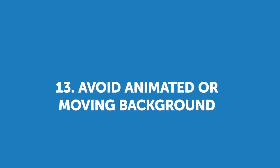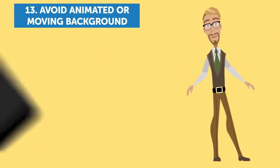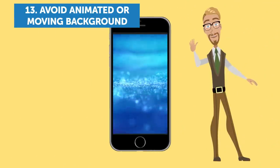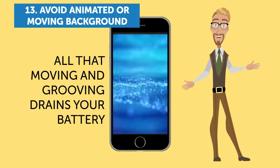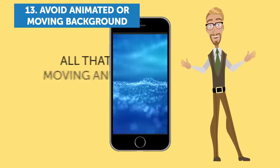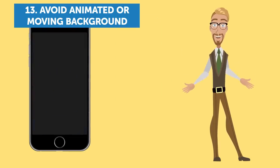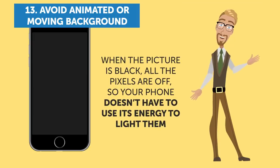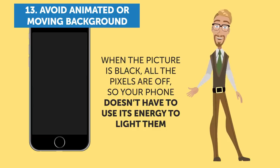13. Avoid Animated or Moving Background Pictures. If you like having animated wallpaper on your phone, that's cool and all, but you should know that all that moving and grooving drains your battery. If that doesn't sound like your cup of tea, keep your phone's background simple. In fact, a black one is better in this respect. When the picture is black, all the pixels are off, so your phone doesn't have to use its energy to light them.